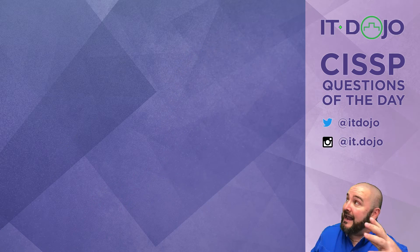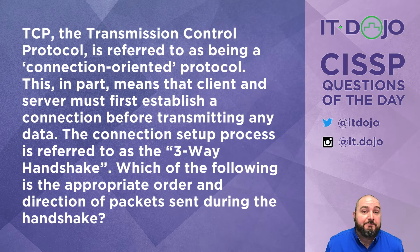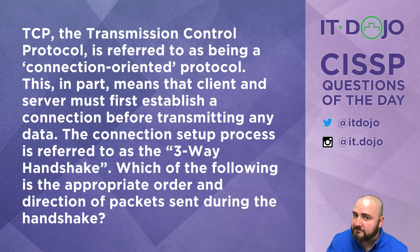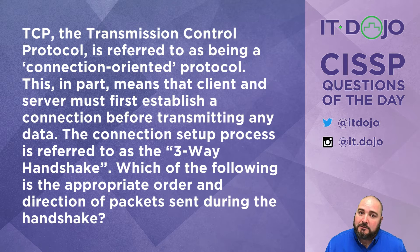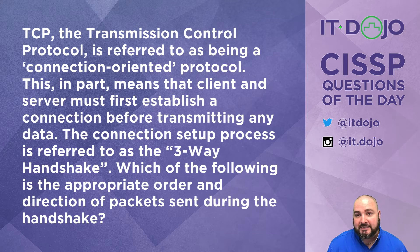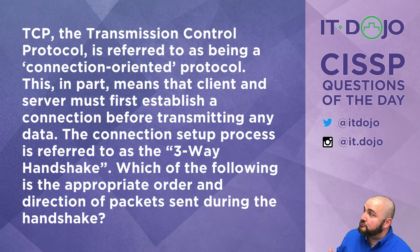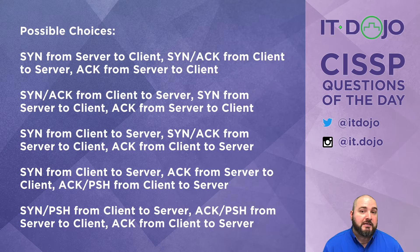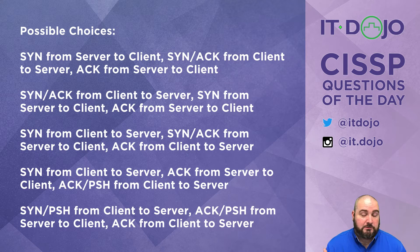Here comes question number one. TCP, the transmission control protocol, is referred to as being a connection-oriented protocol. In part, this means that in order to transmit data, TCP-based protocols must first perform a three-way handshake in order to establish a connection between the client and the server. Now, of all of these different answer choices, which of them describes the back-and-forth exchange that occurs during the TCP three-way handshake? Go ahead and click pause — it's a lot of words. Give it a read. When you're ready, click play and we'll break it down.